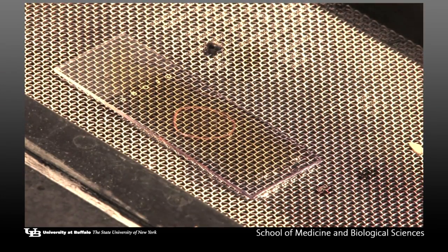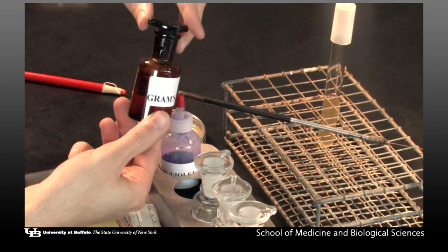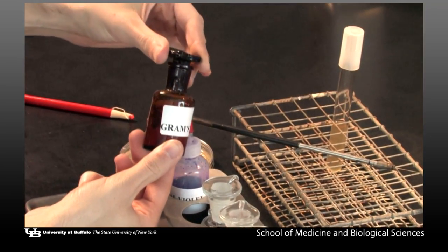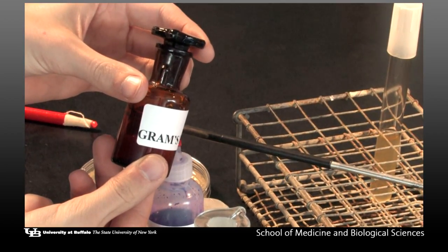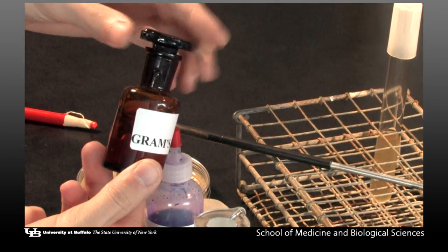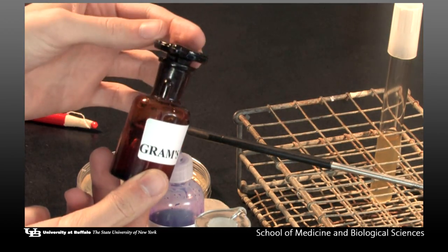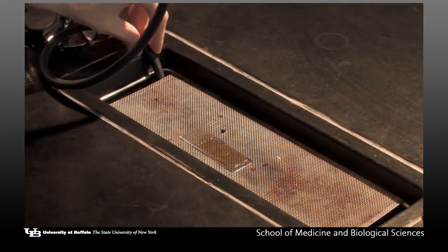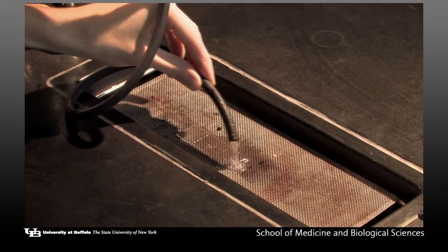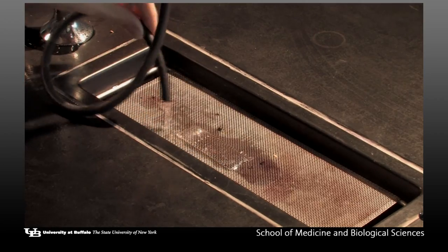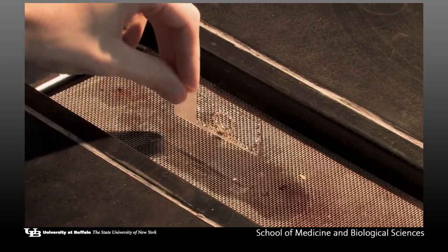Do not remove the cap from the reagent bottle. There is a point on the cap and a ridge on the neck of the bottle. Align the point with the ridge and you will be able to flood the slide. If the point and ridge are not aligned, the Gram's iodine will not pour. You may dispense the other reagents in the Gram staining procedure in the same manner. Wash off stain with water. Tap off the excess water.